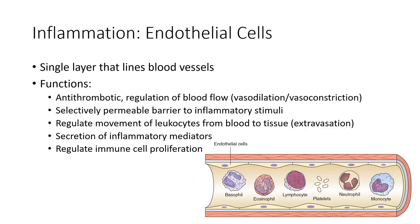The endothelial cells are the single layer of cells that lines the blood vessel. Endothelial cells play multiple roles in the body with regard to inflammation. They have an antithrombotic function and regulate blood flow through vasodilation and vasoconstriction. Endothelial cells create a selectively permeable barrier to inflammatory stimuli, regulate movement of leukocytes from blood into tissue, secrete inflammatory mediators, and regulate immune cell proliferation — meaning they can control the division and increase in numbers of white blood cells in response to infection or injury.